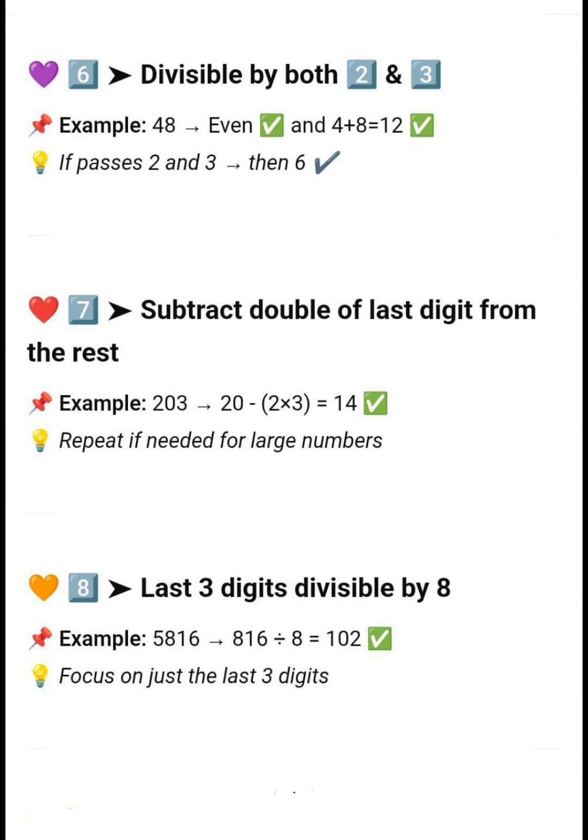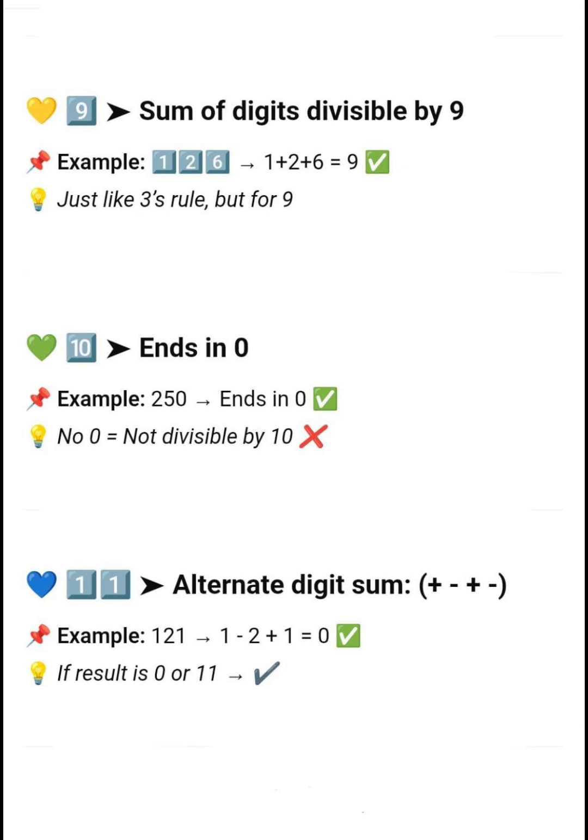Next, divisible by 8 — if the last three digits are divisible by 8. Next, divisible by 9 — if the sum of digits is divisible by 9, for example 126.